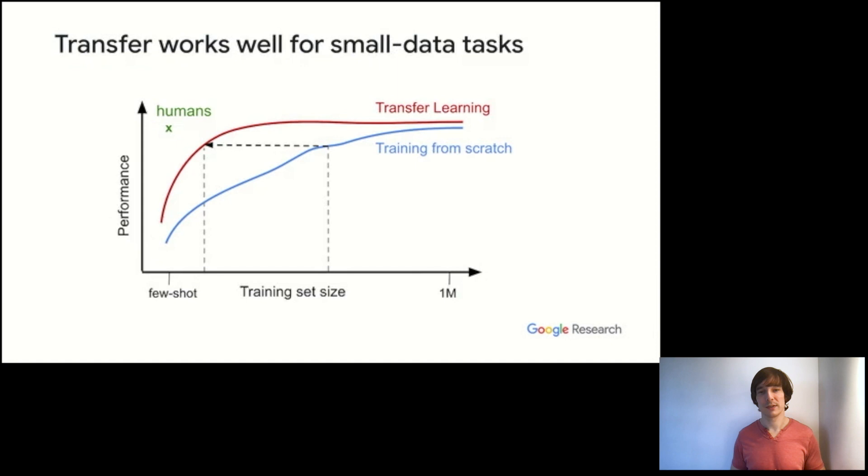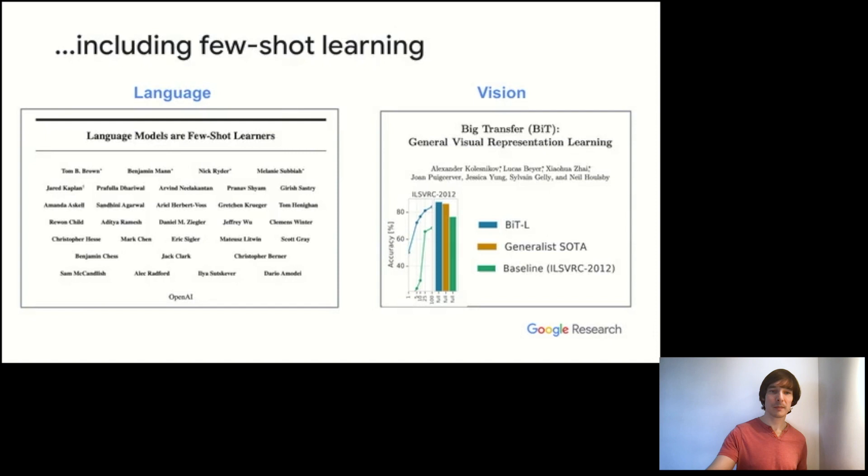And transfer learning is neat, not only because it works on medium or large datasets like ImageNet with a million images, but it's also effective on smaller downstream tasks. And in fact, perhaps it's more effective when the amount of downstream data is limited. In the limit of few-shot learning, transfer has been shown to be effective. So the very well-known GPT-3 paper shows that large language models can be used for few-shot text-based tasks. And in computer vision, some work from our group has shown that large-scale transfer can work well on popular tasks like ImageNet when transferred using only one image per class.